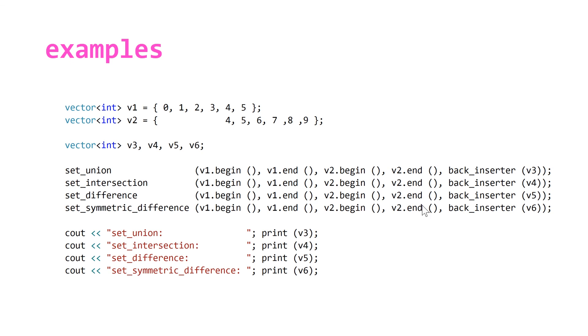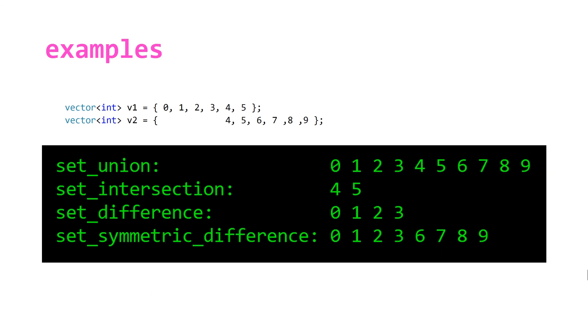We're calling each of these algorithms. We're using the back_inserter function to create basically an output iterator to the back of our vectors that are empty at the moment, and then we're doing some output here at the end. If we do this, it will output the following: As expected, set_union has all of the values in both v1 and v2. Set_intersection only has the ones that exist in both: 4 and 5. Set_difference only contains the elements that are in v1 but not in v2. Set_symmetric_difference has everything but the intersection: 0, 1, 2, 3, not 4 and 5, and 6, 7, 8, 9.